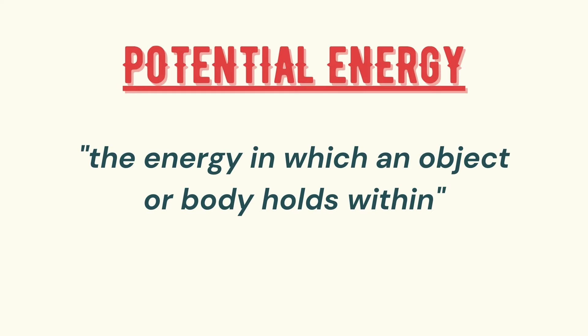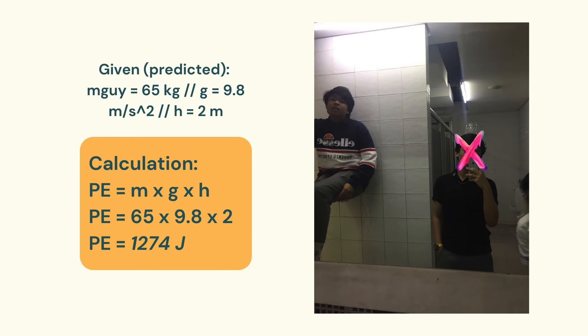Moving on from Newton's laws of motion, we will discuss energy — the first being potential energy. Potential energy is the energy that an object or body holds within itself. In this photo, the guy hanging on the wall contains potential energy, which exists because of his motion as he slowly slips downward. Predicting that the mass of the guy is 65 kilograms, gravitational acceleration is 9.8 m/s², and height is 2 meters, and using the formula PE = M × G × H, we get PE = 65 × 9.8 × 2, resulting in a potential energy of 1274 joules.